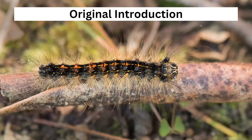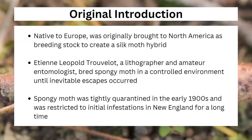How was Spongy Moth originally introduced into our country? Like many insects that we deal with now, it was actually intentionally brought here. Back in 1869, a gentleman named Etienne Leopold Trevelo, a lithographer and an amateur entomologist, wanted to breed Spongy Moth to try to create some kind of hybridized silk moth that was able to survive and be used here in North America. Spongy Moth was native to Europe and Asia, so he brought over breeding stock. Unfortunately, he was only an amateur entomologist, so escapes were inevitable, and it did get out. It was able to establish itself into portions of what would become modern New England, and it was quarantined in those locations in the early 1900s due to the severity of the original infestations.